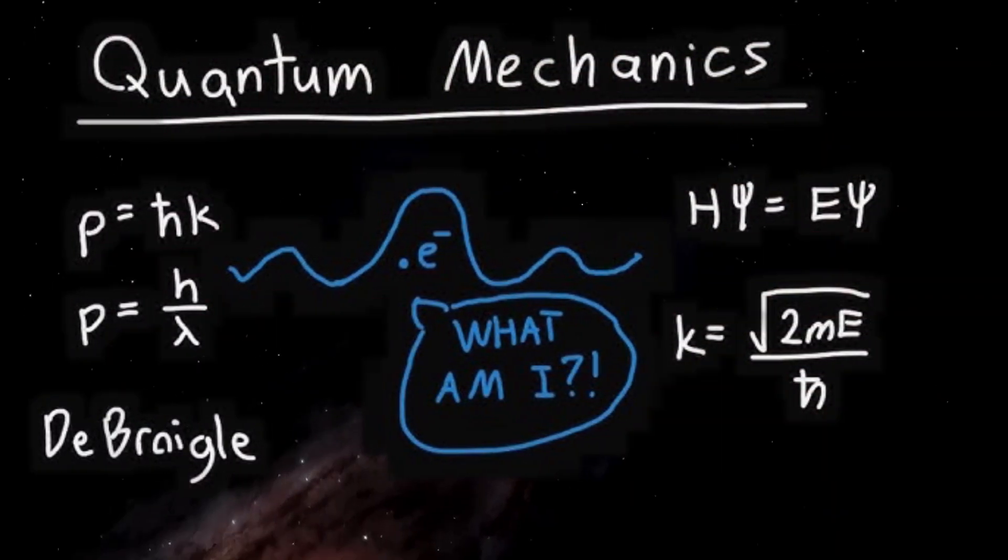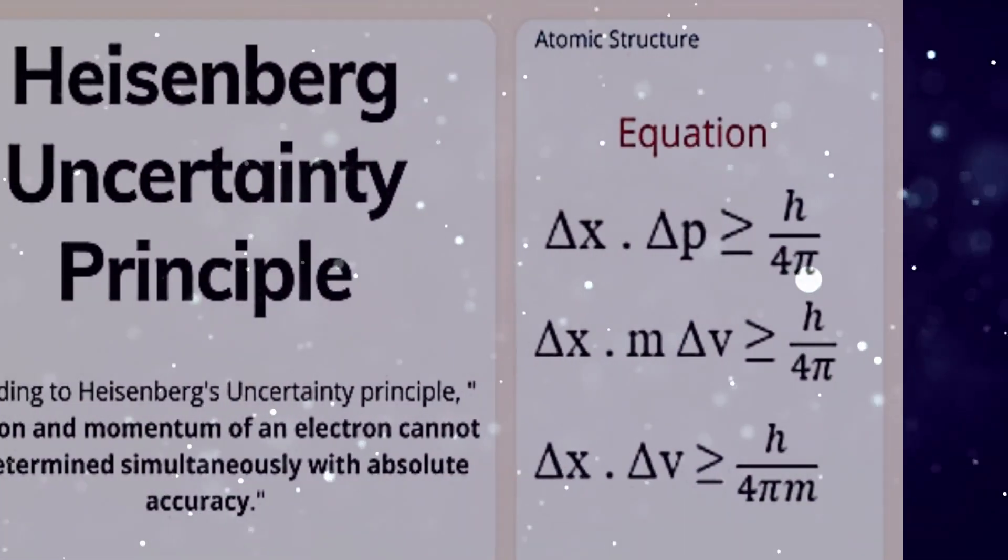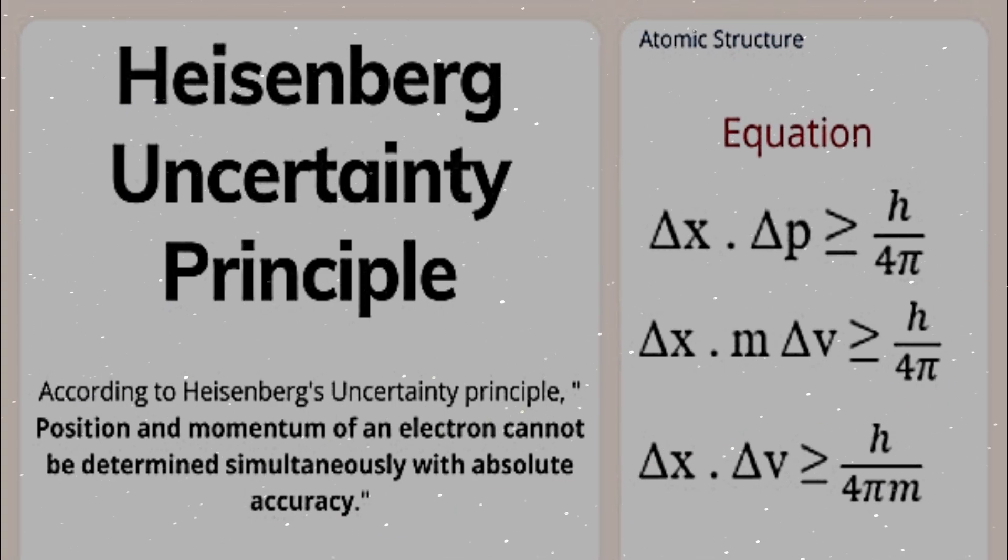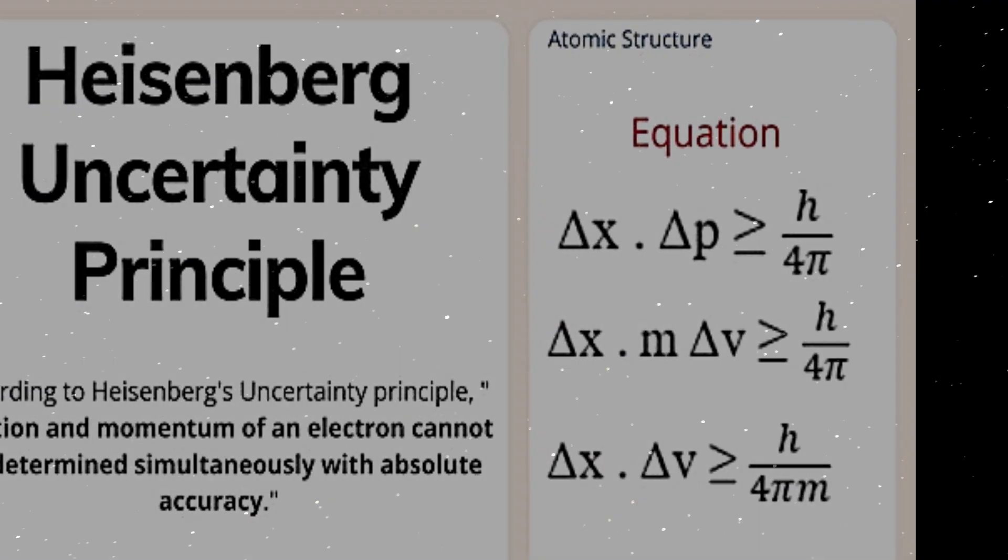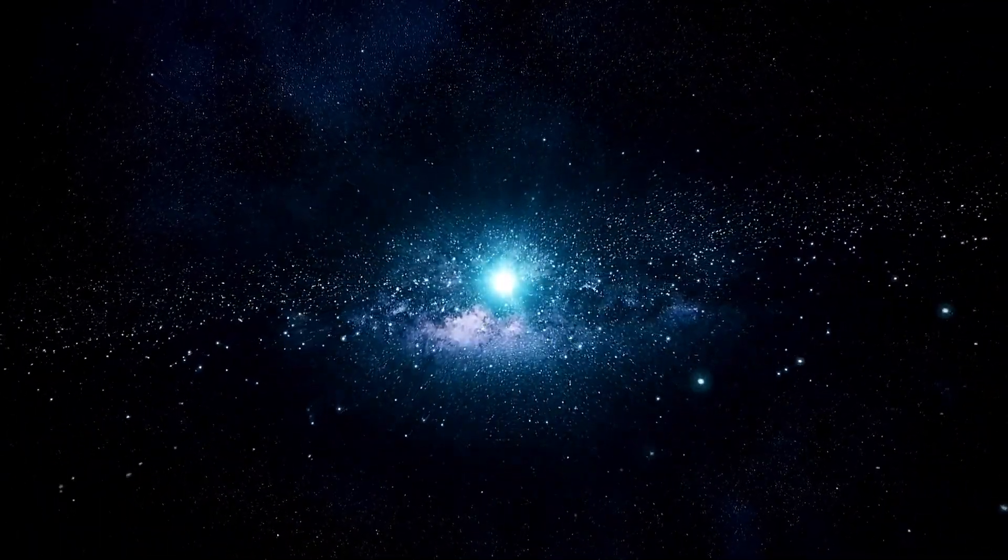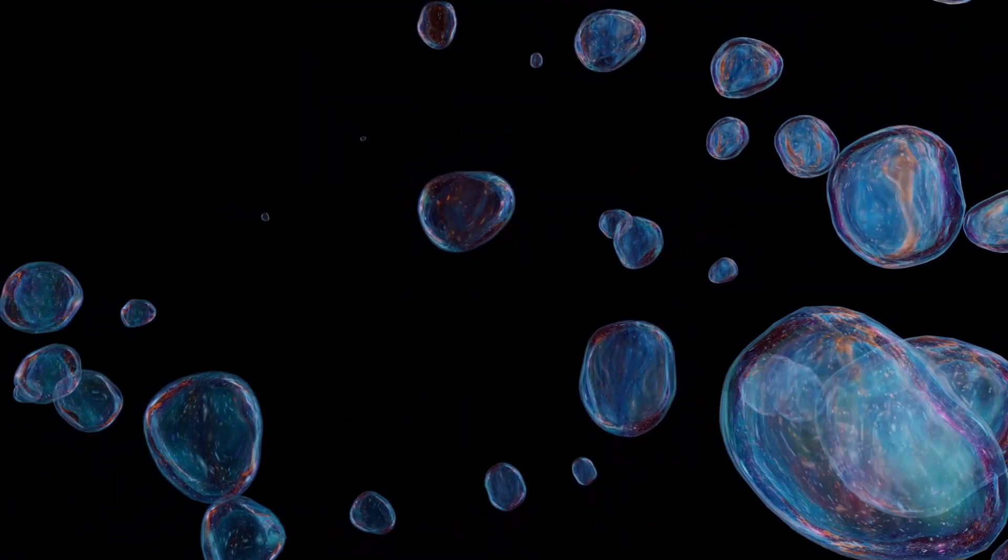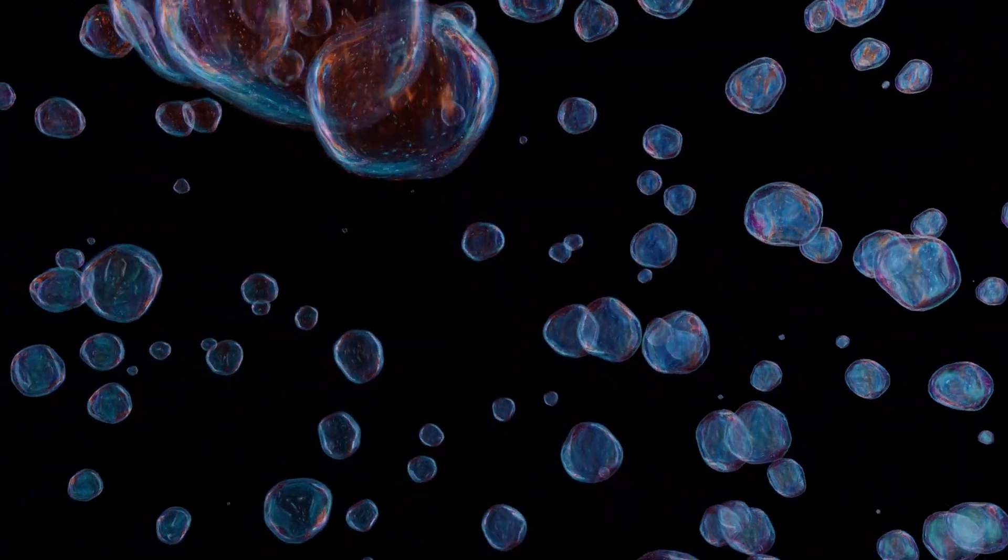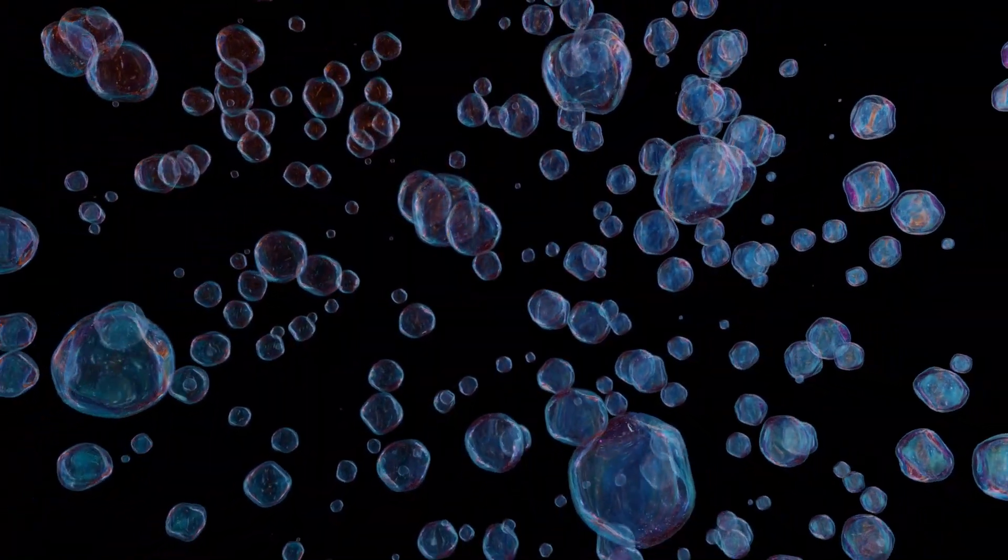In quantum theory, even empty space, which might be perceived as nothing, is not truly empty. Quantum fluctuations mean that particles and antiparticles are constantly appearing and disappearing, even in what seems like a vacuum. This activity is driven by the Heisenberg uncertainty principle, which states that certain properties of particles, such as their position and momentum, cannot be measured with absolute precision. This principle applies to energy as well, meaning that there is always a minimum level of uncertainty in even the most empty regions of space.